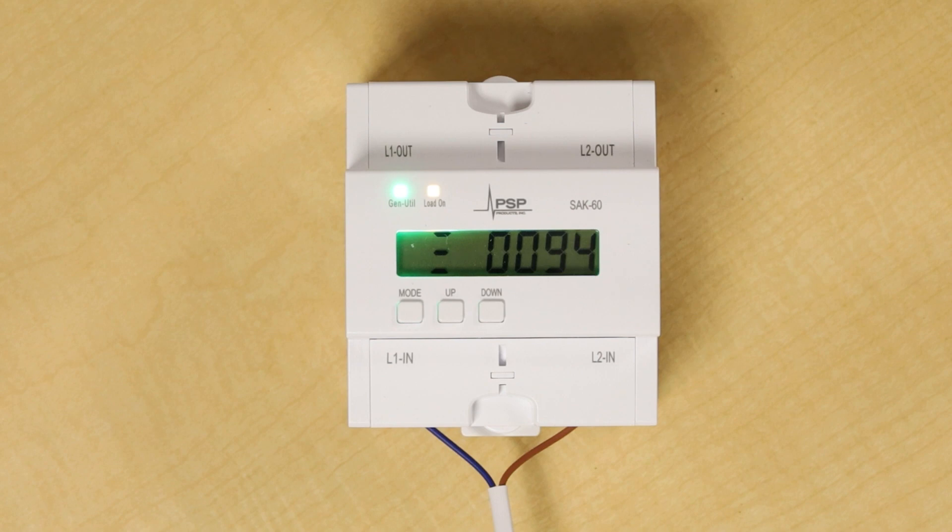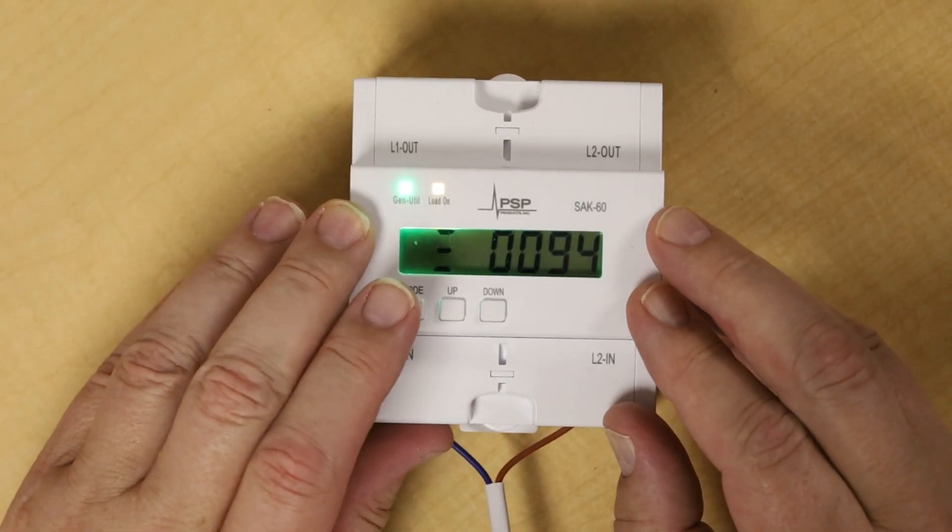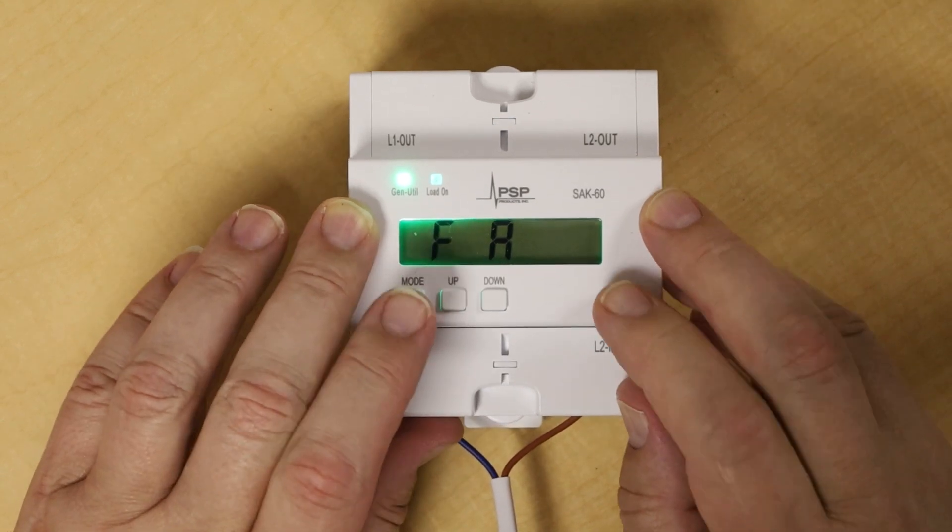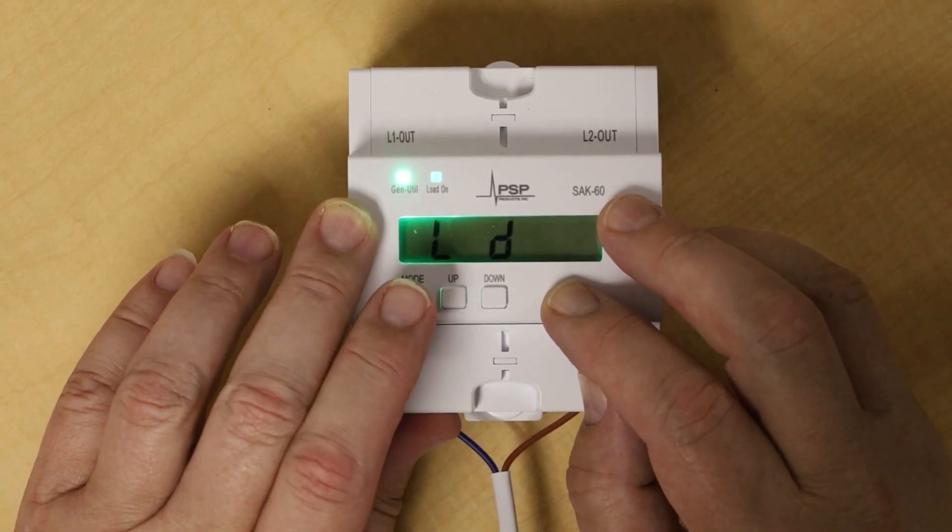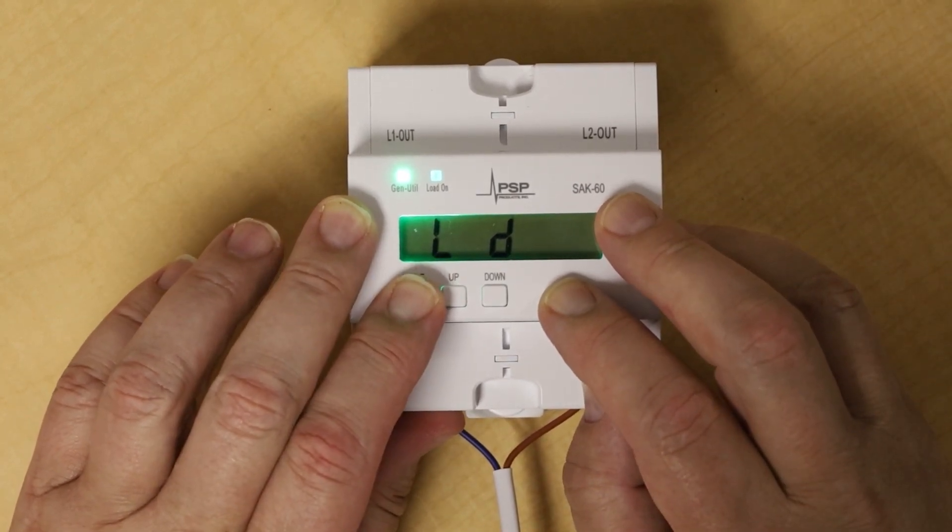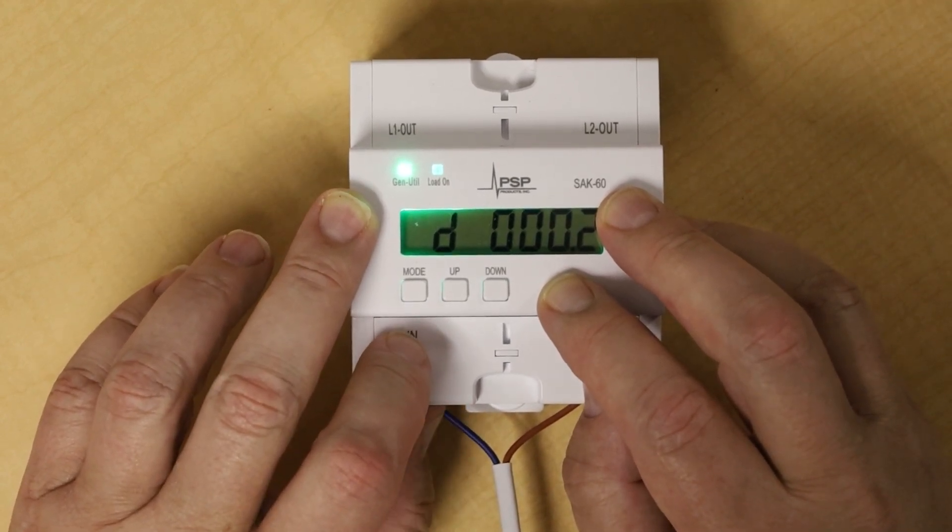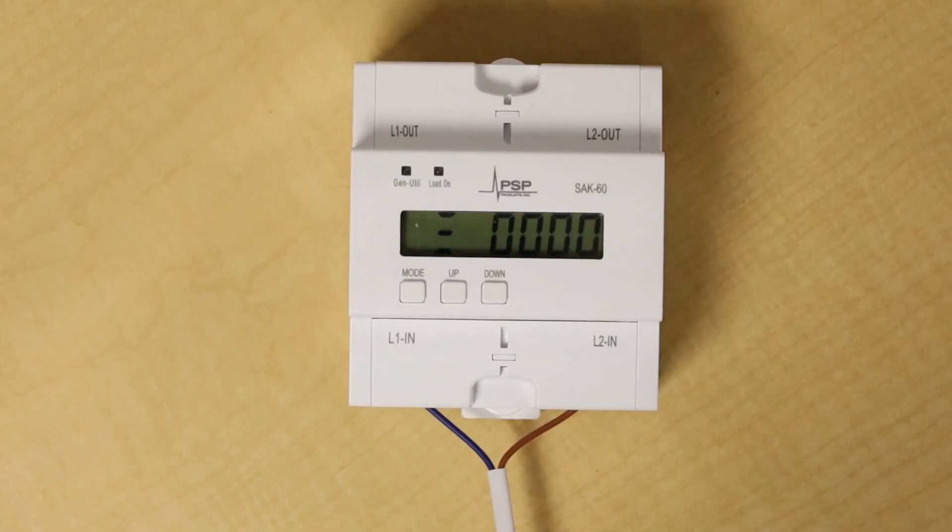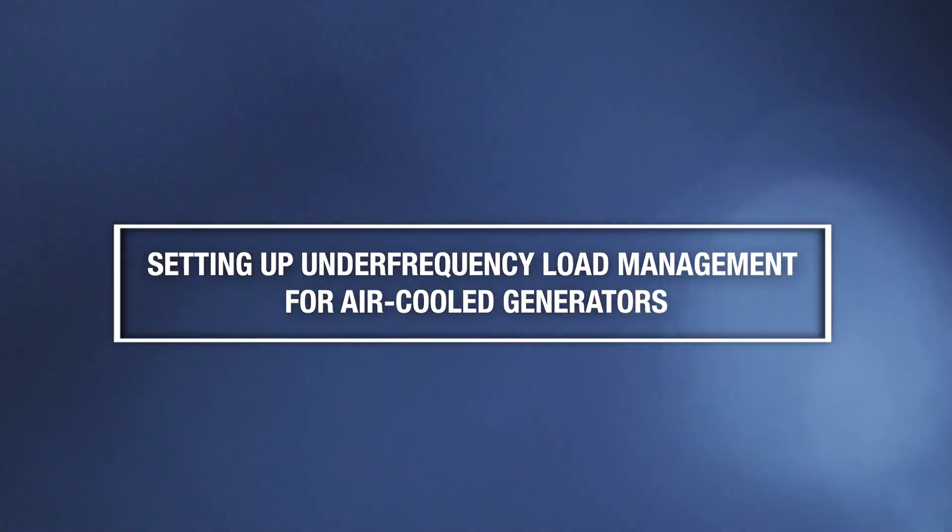To set up for generator lockout, first hold the mode button for about 3 seconds until FA appears. Press the mode button briefly to scroll to LD for load drop. Then hold the mode button again for 3 seconds to enter the programming mode. There's only one setting here, D000.2, which does not need adjustment. The SAK60 is now set for load drop, so that the load will be off any time you're on generator power.